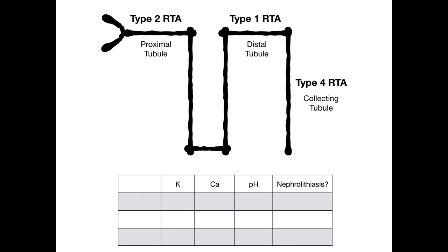So how are you going to remember the order of 2-1-4? If you know 2-1-4, then you can remember proximal, distal, collecting, and you'll be able to place the RTAs. I want you to say it over and over again, like you're kind of singing: 2-1-4, 2-1-4, 2-1-4. That's the order: proximal, distal, collecting — 2-1-4.